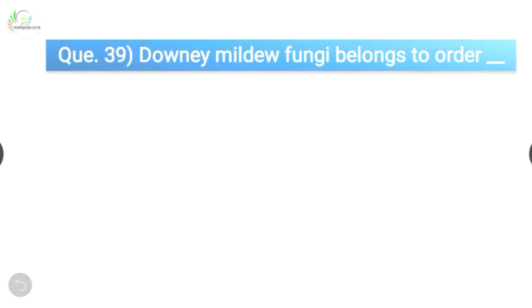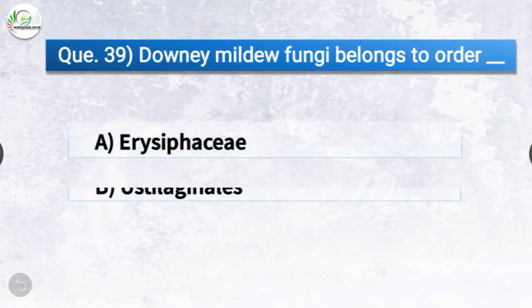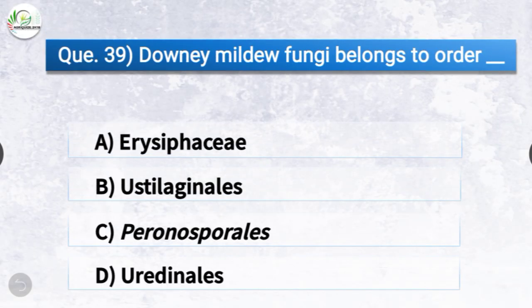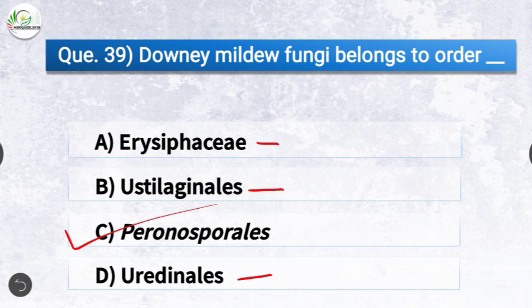Question number thirty-nine: Downy mildew fungi belongs to order dash. The options are Erysiphaceae, Ustilaginales, Peronosporales, or Uredinales. The correct answer is option C, Peronosporales. Downy mildew fungi belongs to order Peronosporales, whereas powdery mildew fungi belongs to Erysiphaceae, smut fungi belongs to Ustilaginales, and rust fungi belongs to Uredinales.